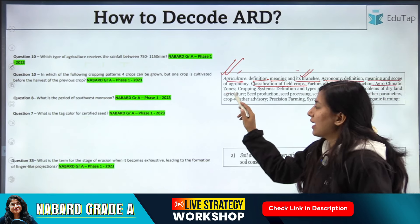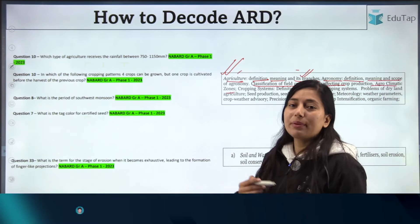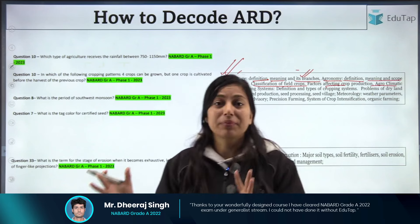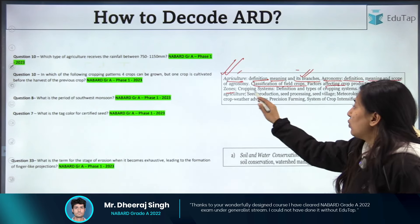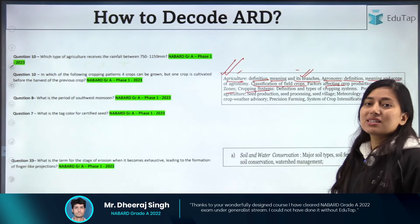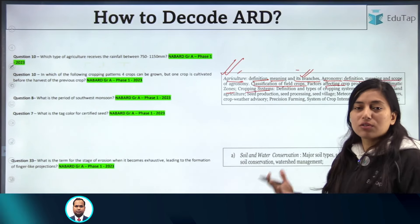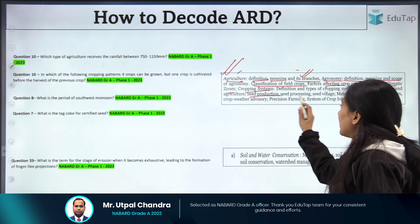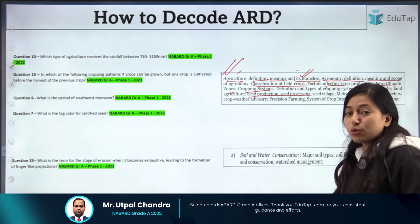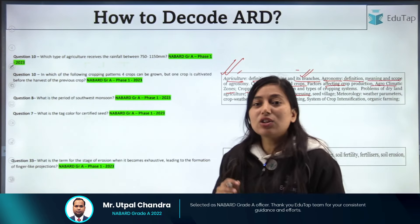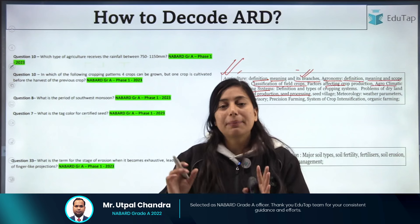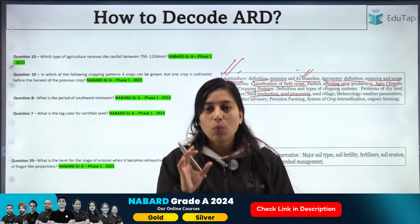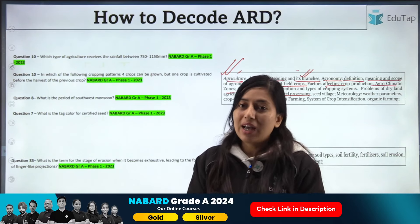Then study cropping systems and cropping patterns — the different types of cropping systems. Then seed production and seed processing. Go through all the topics given in your syllabus one by one and prepare your own notes. You can refer to any book and prepare notes based on the topics given in the syllabus.